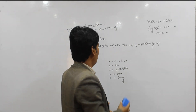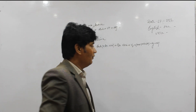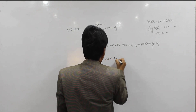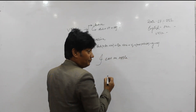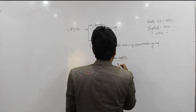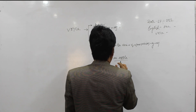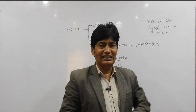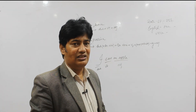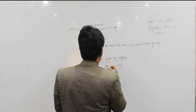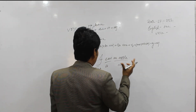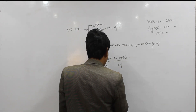Now we can see some examples of active voice and passive voice — how they can be transformed from active to passive. Take the sentence: 'I eat an apple.' Here 'I' is the subject, 'eat' is a VT — that is, transitive verb — and 'an apple' is the object. This object 'an apple' will be placed as the subject in the passive voice, written at the very beginning.